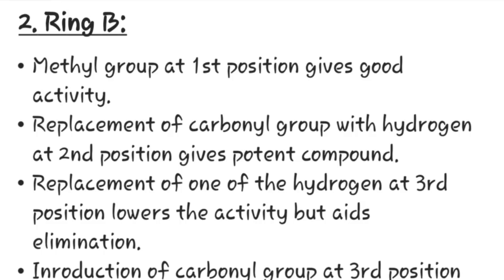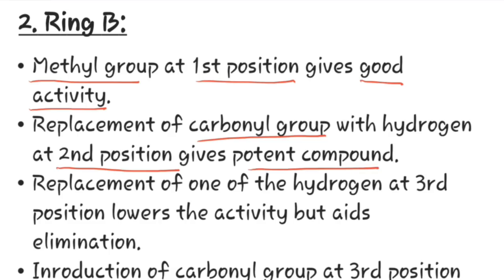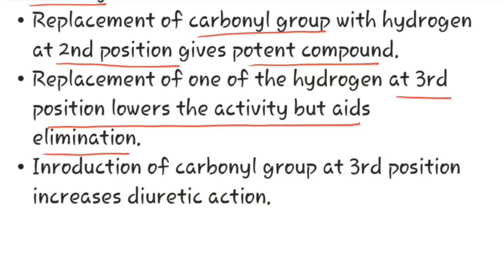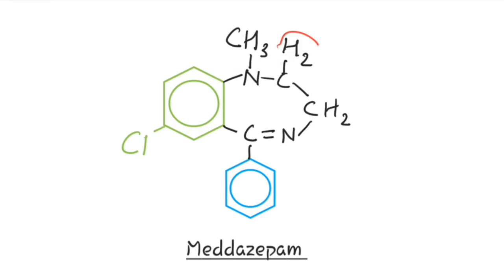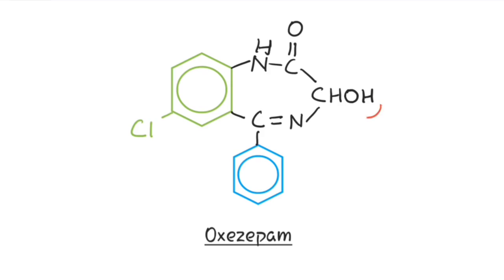Now let us study modification in ring B. A methyl group at the first position gives good activity, and metazepam is the best example showing good activity. Replacement of the carbonyl group with hydrogen at the second position gives a potent compound, and medazepam serves as an example. Replacement of one hydrogen at the third position lowers activity but aids elimination, and oxazepam is an example. Introduction of a carbonyl group at the third position increases diuretic action.